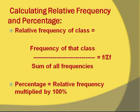To calculate the relative frequency and percentage, you have the relative frequency of a class equaling the frequency of that class divided by the sum of all frequencies, which equals F divided by the sum of F. A percentage equals relative frequency multiplied by 100 percent.